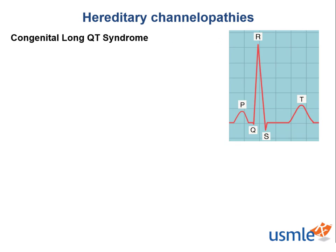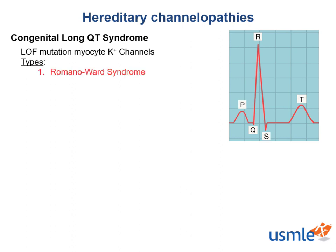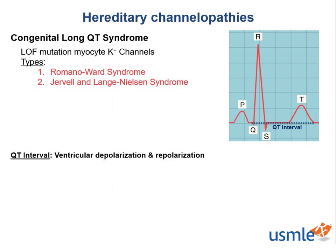Next, let's talk about congenital long QT syndromes, both of which are caused by a loss of function mutation of potassium ion channels in cardiac myocytes. The two conditions you need to know are Romano-Ward syndrome and Jervell and Lange-Nielsen syndrome. To refresh your memory, the QT interval is the duration between the beginning of the Q wave and the end of the T wave. It represents ventricular depolarization and repolarization — the time when the ventricles start to contract to when they finish relaxing.